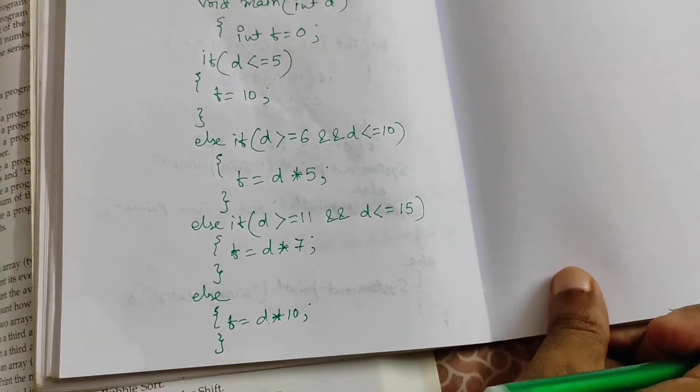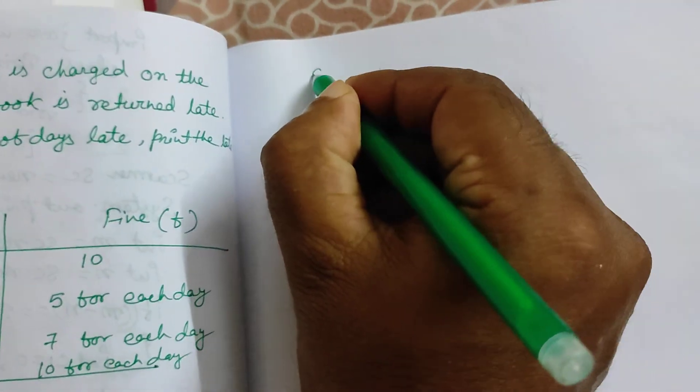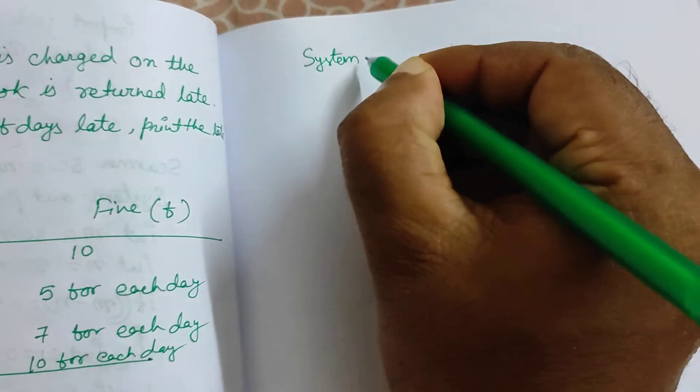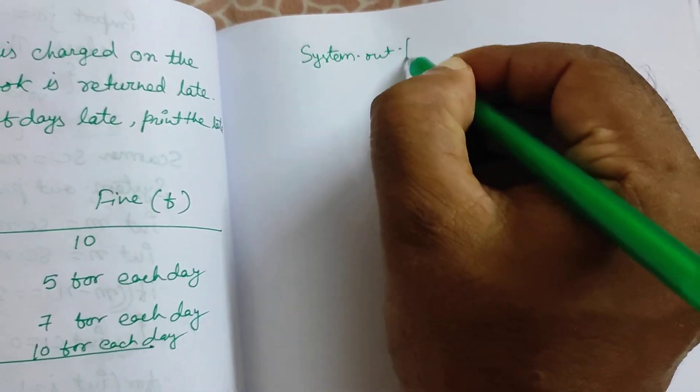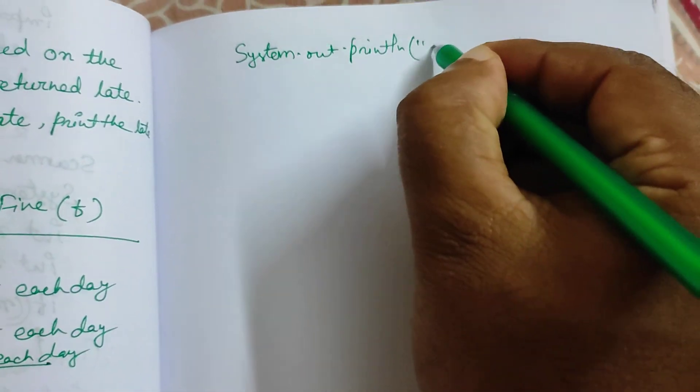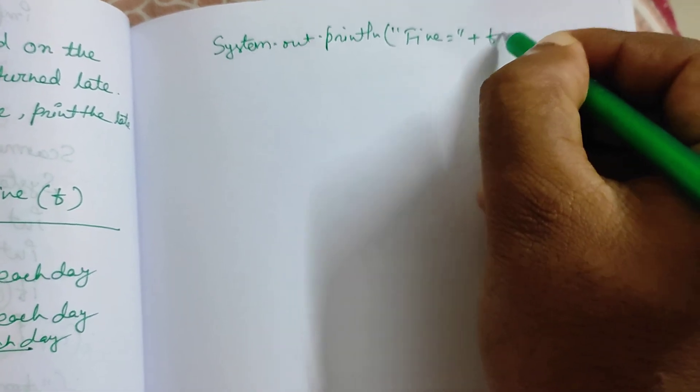Now we have got this fine, now we will print the fine here. So system.out.println, system.out.println, within double quotation, fine equals to plus f.